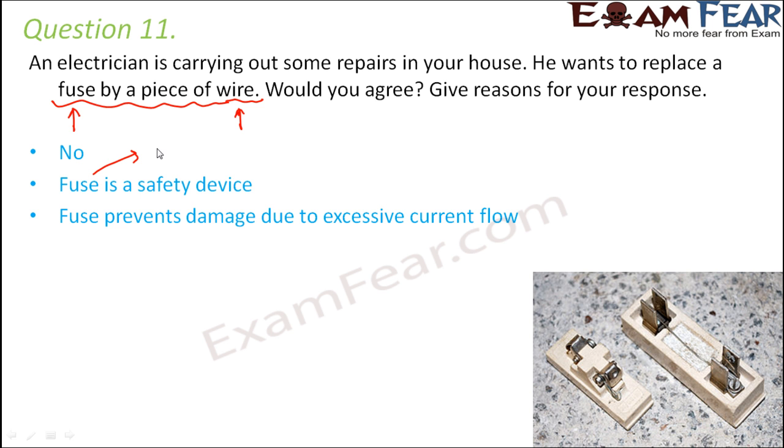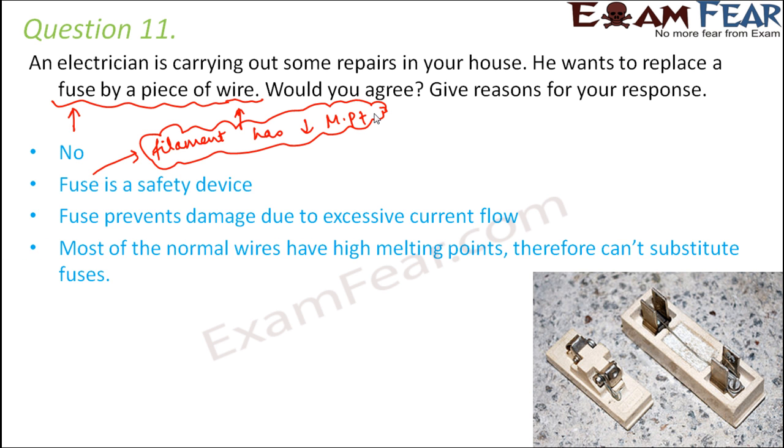While choosing the wire in a fuse, the fuse filament basically, it is taken care that it has a considerably low melting point so that it melts and breaks during excess current. Fuse filament that is the wire inside the fuse has considerably or comparatively low melting point and that is the property because of which fuse is important. Most of the normal wires have high melting points. Therefore, they can't substitute fuses.